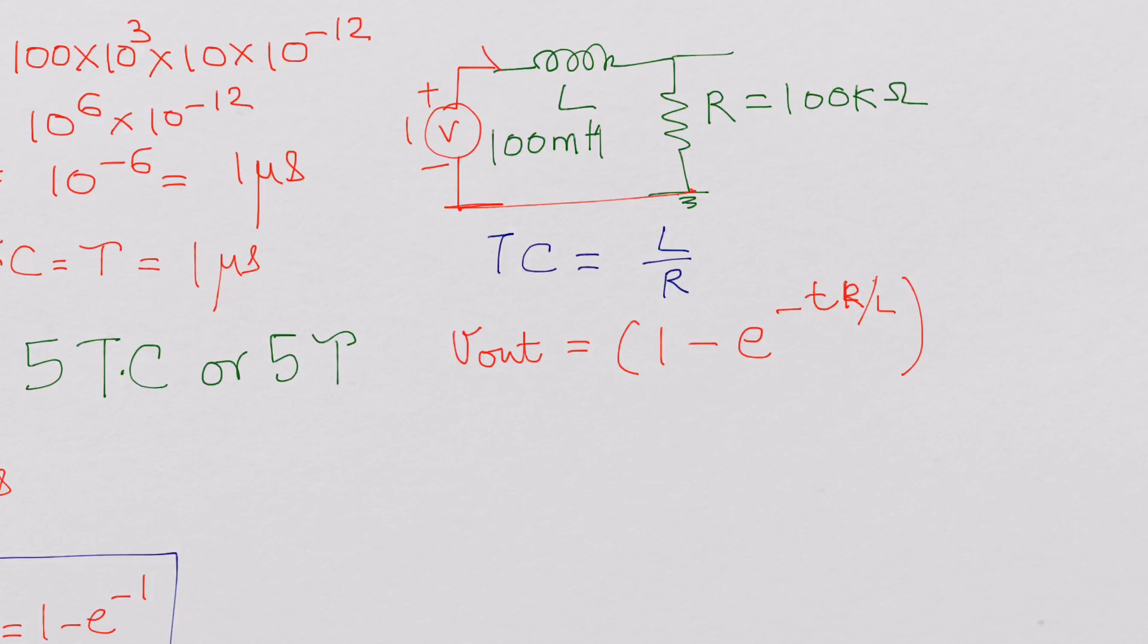If you take that into the denominator, it is 1 minus e power minus T. Just leave the T in the numerator, so it would be L over R here. So we had RC before, now it is L over R.